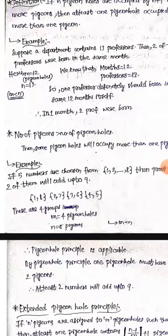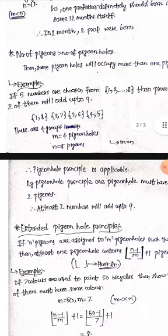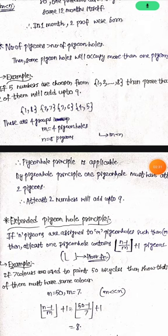And here, the given number of numbers is 5, so n equals 5. That is, the number of pigeons is 5. So, same as the above problem, here also m is less than n, so pigeon hole principle is applicable. So by pigeon hole principle, 1 pigeon hole must have at least 2 pigeons. So at least 2 numbers will add up to 9. This type of problem can be solved using pigeon hole principle.